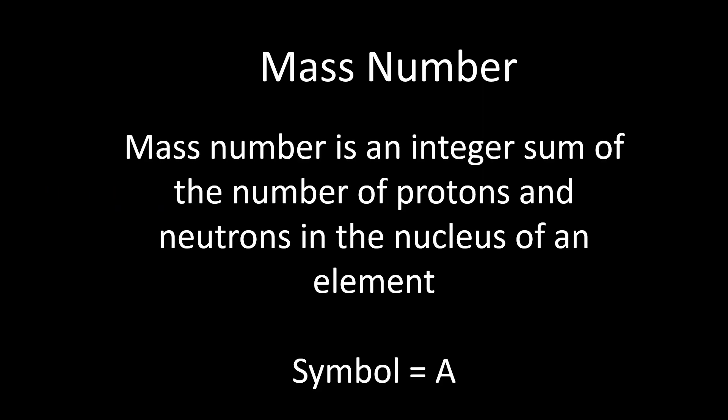First off, what is mass number? The mass number is the number of protons and neutrons in the nucleus of an element, and can be represented by the symbol capital A. It's an integer value that identifies specifically how many neutrons and protons are in the nucleus of a particular element.